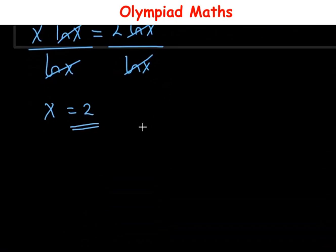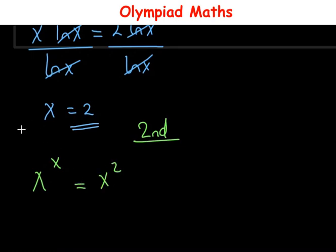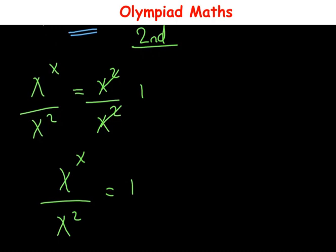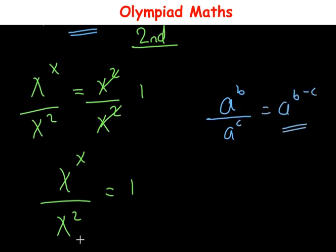For the second method, we have x raised to power x equals x raised to power 2. We divide both sides by x raised to power 2, giving x raised to power x over x raised to power 2 equals 1. Applying the indices rule that a raised to power b over a raised to power c equals a raised to power b minus c, we get x raised to power (x minus 2) equals 1.